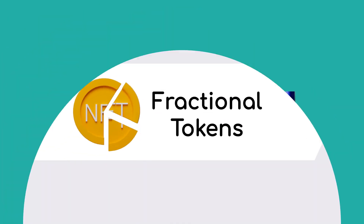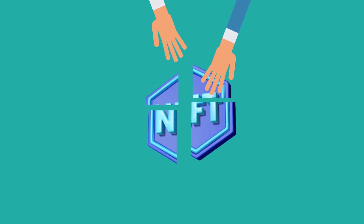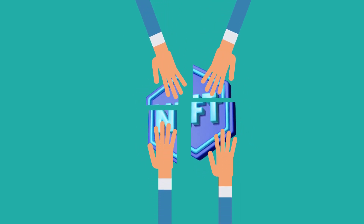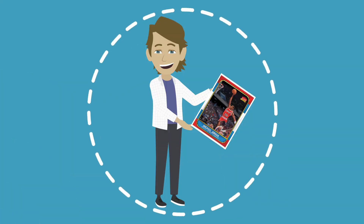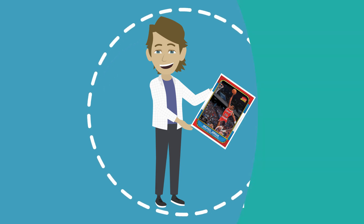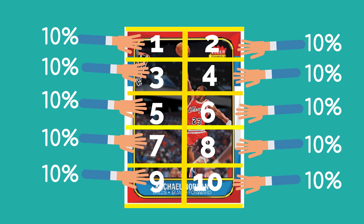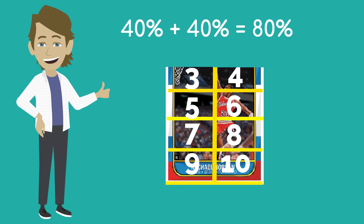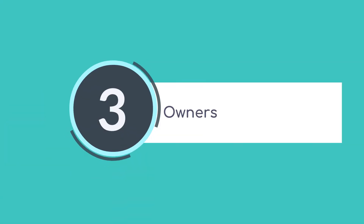Fractional tokens: It's worth noting that there are also fractional tokens, which function in a manner similar to NFTs but with a key distinction — they represent a portion of ownership rather than the entire item. For example, imagine you possess a Michael Jordan rookie card and create 10 fractional tokens, each representing a share of ownership. If you sell two tokens while retaining eight, you maintain an 80% ownership stake in the card's total value.